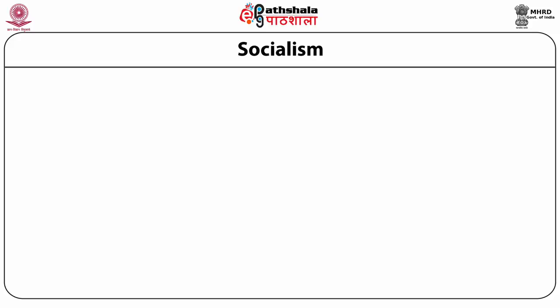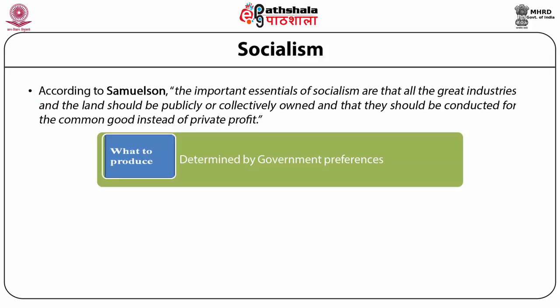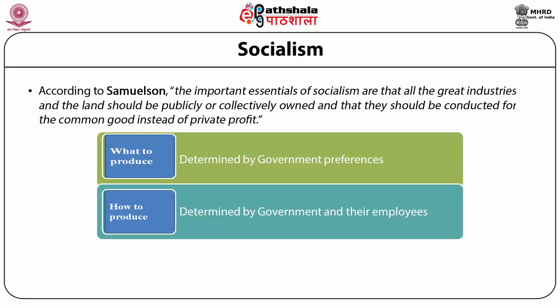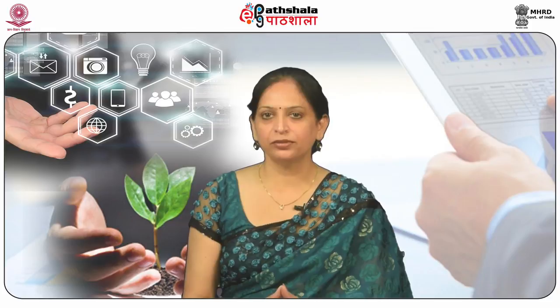The second type of economic system is socialism. Samuelson defines socialism as a system where all great industries and land should be publicly or collectively owned and conducted for the common good instead of private profit. In socialism, the three decisions are: 'what to produce' is determined by the preferences of the government; 'how to produce' is also determined by the government and employees; and 'for whom to produce' is again determined by the government, taking into consideration the needs of the public.